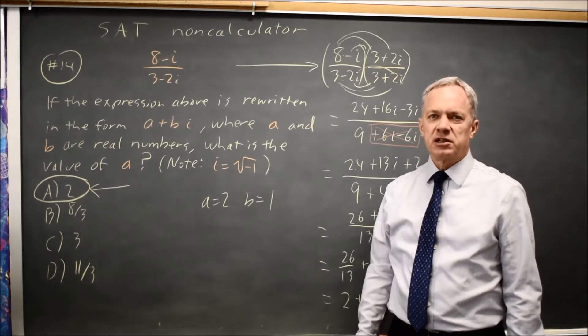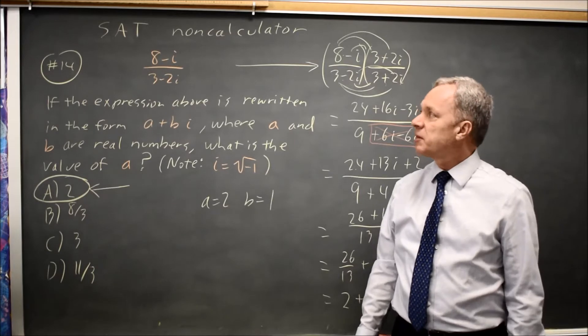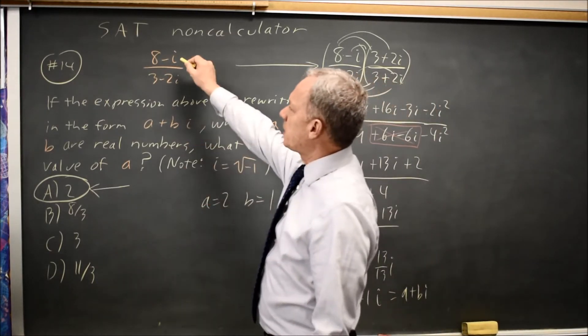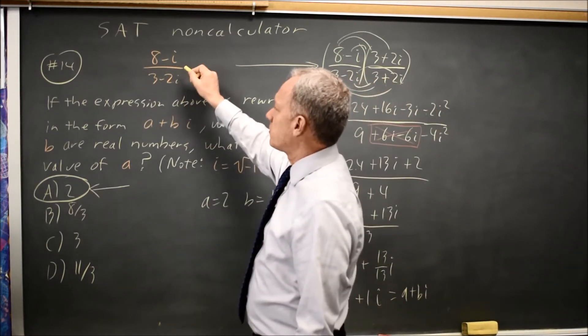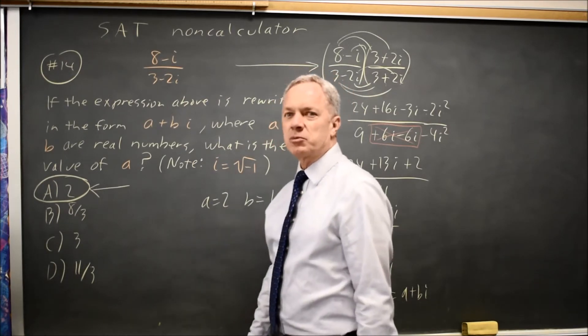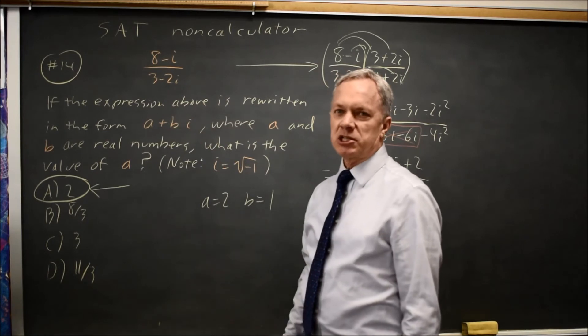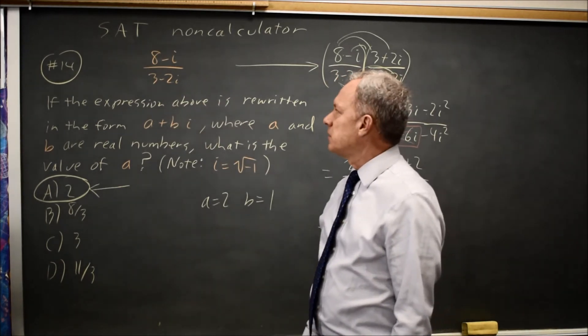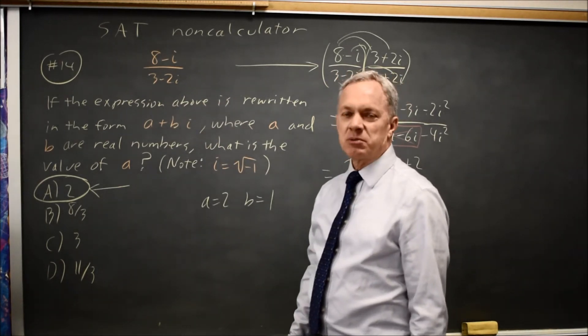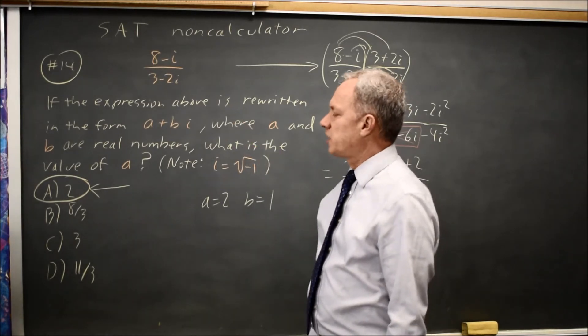Answer the question they're asking, and then after the exam go back and try adding these two numbers, 8 minus i plus 3 minus 2i. Try subtracting the numbers, 8 minus i minus the quantity 3 minus 2i. Try multiplying them, 8 minus i times 3 minus 2i, and we already tried dividing.